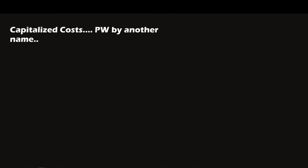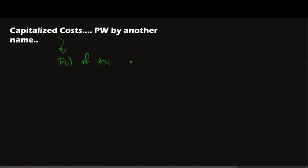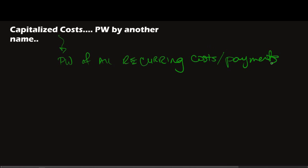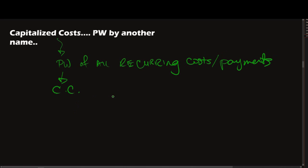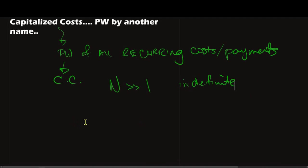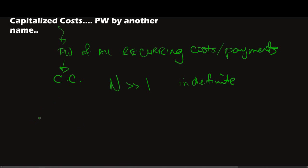We're going to look at capitalized cost, which is another name for present worth — specifically the present worth of all reoccurring costs or payments. This is particularly used when the number of periods is quite large, and in some cases you'll see this referred to with an indefinite time frame, meaning we're going to do present worth analysis with an indefinite time frame.